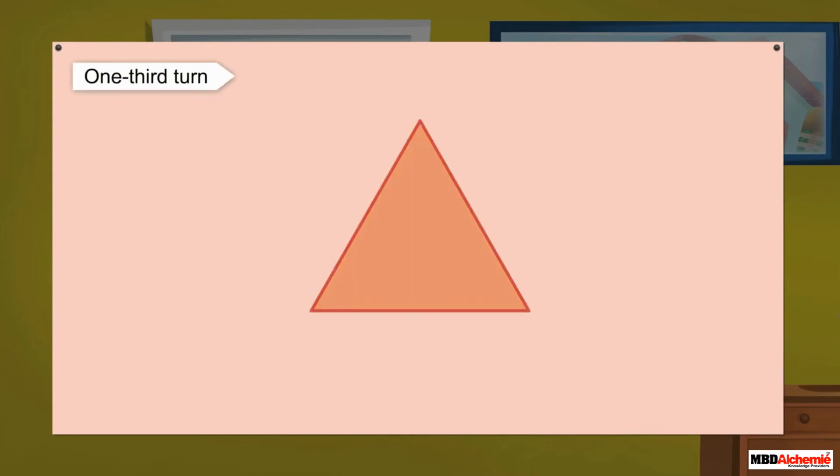One-third turn. This is an equilateral triangle. When we make a one-third turn, it looks exactly the same.